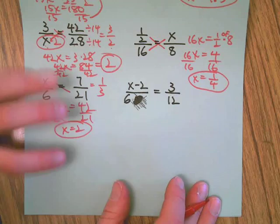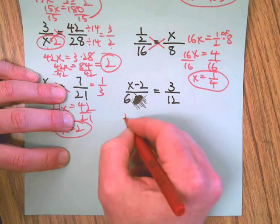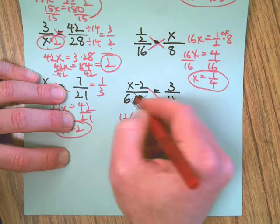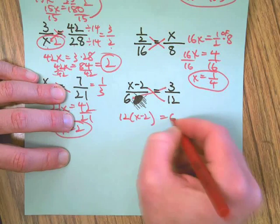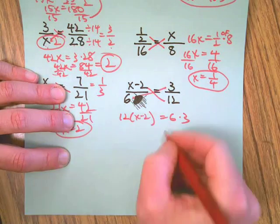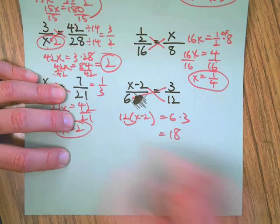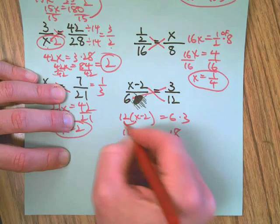But if you don't see that relationship, cross multiply, divide by the coefficient of X, and you still get the same answer. So different methods, same answer, both methods are good. Last problem: 12 times (X minus 2), that's 6 times 3 on the other side.